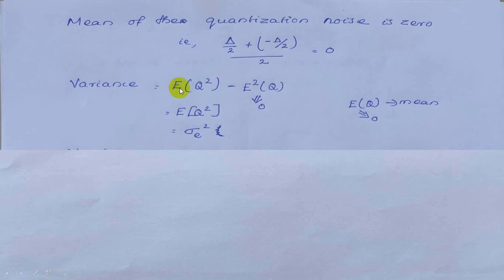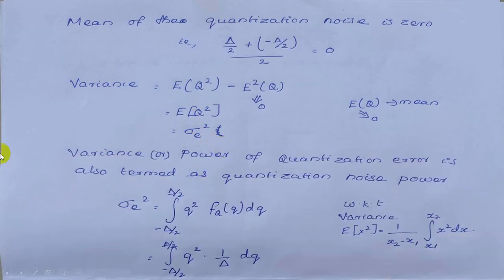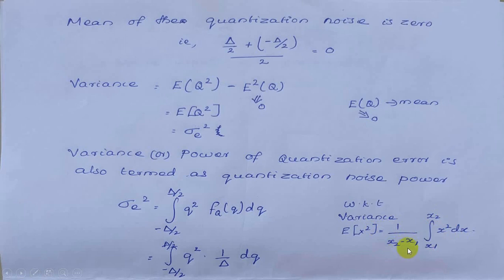The variance equals E[q²] minus E[q]². Since the mean E[q] equals 0, the variance equals E[q²], also written as sigma_e². The variance or power of the quantization error is called the quantization noise power. We know variance equals (1/(x2 − x1)) times the integral from x1 to x2 of x² dx. Here x2 − x1 equals delta/2 − (−delta/2) = delta, so we get 1/delta, which equals f_q(q). Therefore sigma_e² equals the integral from −delta/2 to delta/2 of q² times (1/delta) dq.